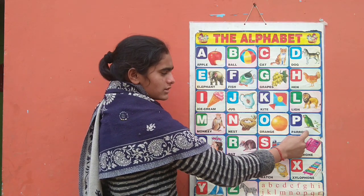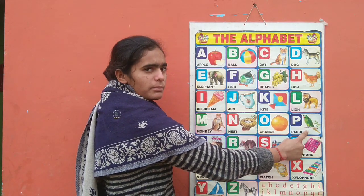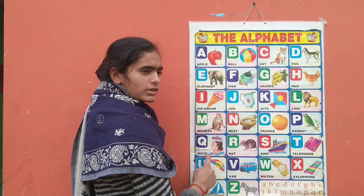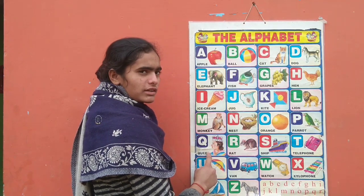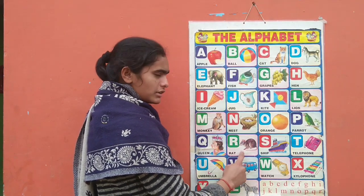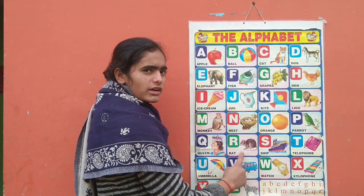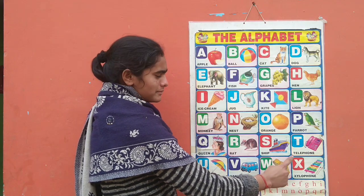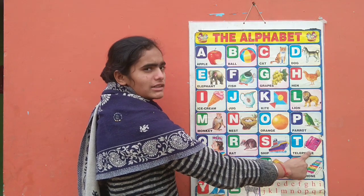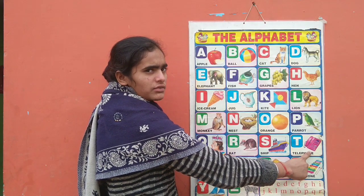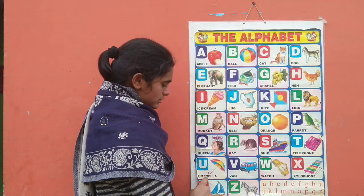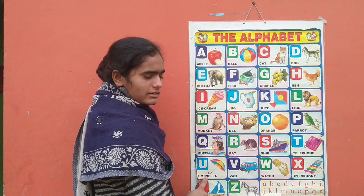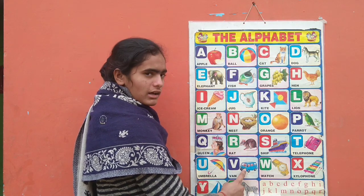T for parrot, U for queen, R for red, S for sheep, T for teddy phone, U for umbrella.